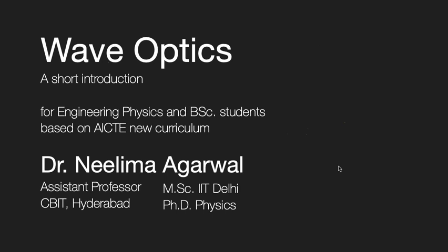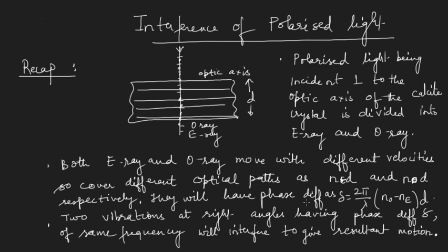In the last lecture we saw how the Nicol prism can act both as a polarizer and analyzer. With the help of the Nicol prism we can get polarized light. Then we saw another important phenomenon called interference of polarized light.